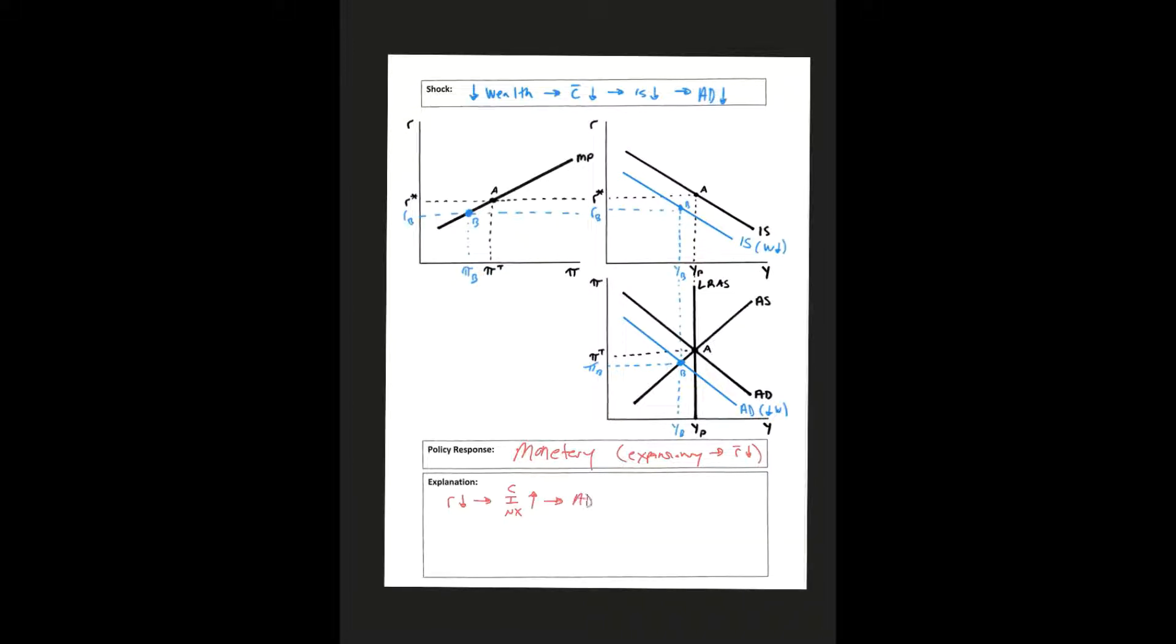That's going to make our aggregate demand curve shift to the right to get us back to long run. But what does this look like on our model?